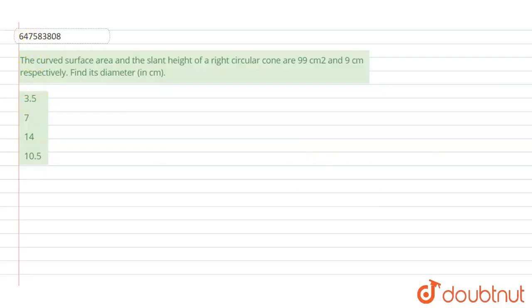Hello, so this is your question. The curved surface area and the slant height of a right circular cone are 99 cm squared and 9 cm respectively. We have to find its diameter.